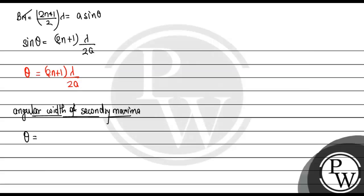So theta_n+1 minus theta_n equals (n+1) lambda upon a minus n lambda upon a. This gives us theta equals lambda upon a. So this is the angular width of secondary maxima.